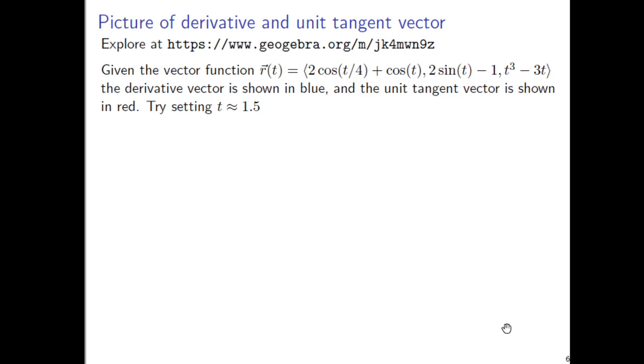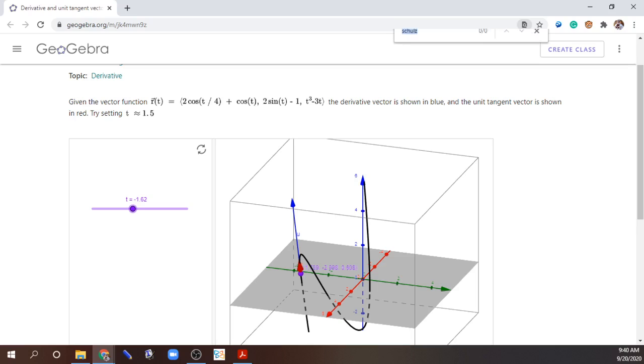So let's take a look at what this looks like in this app. In the app that we'll click on in a second, there's this vector function that's given and the derivative vector at a specific t value is going to be shown in blue and the unit tangent vector is going to be shown in red. Let's try setting t to be approximately 1.5.